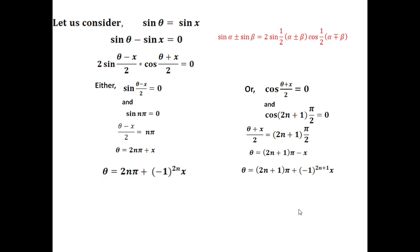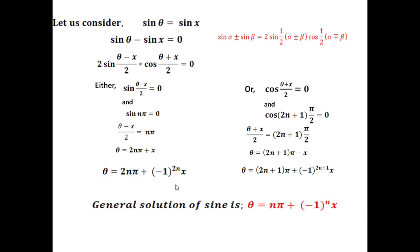So this can also be written as θ = (2n+1)π + (−1)^(2n+1) · x, since (−1) to any odd power gives −1, sustaining the minus sign. Combining both equations — whether n is even or odd — we can directly write the general solution of sine as: θ = nπ + (−1)ⁿ · x, where n is any integer.